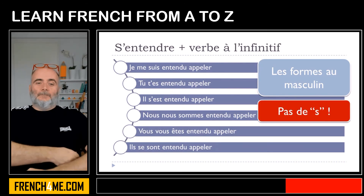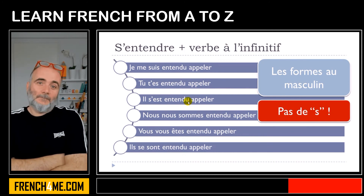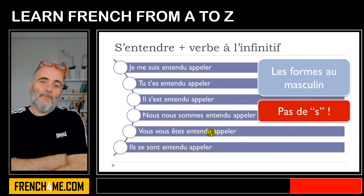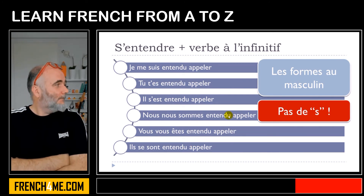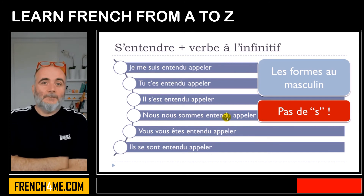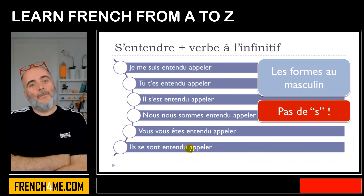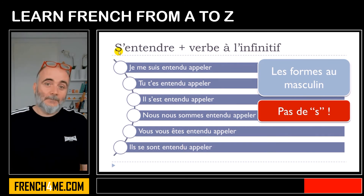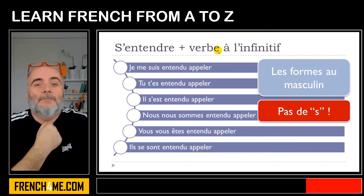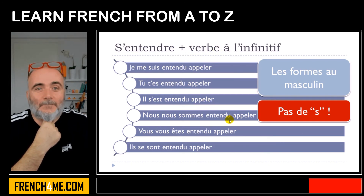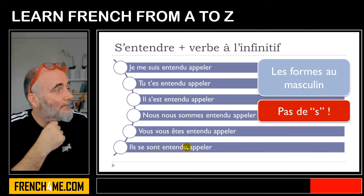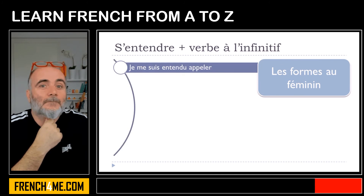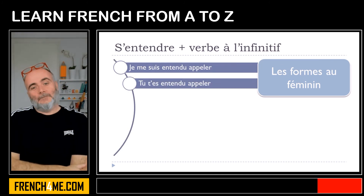The main thing to keep in mind is that you won't put an s at the end of your participe passé. Normally with these types of structures we put an s for the plural form, but when you use s'entendre followed by a verb at the infinitive, you do not put that s at the end of your participe passé.